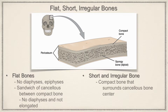Short and irregular bones: short bones would be like your carpal bones in your wrist, and also the tarsal bones in your ankle. Irregular bones are going to be like the vertebrae.